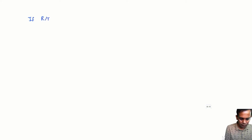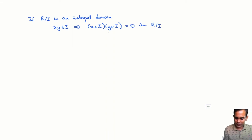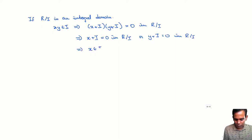Conversely, if R mod I is an integral domain, we just reverse the argument. Suppose XY belongs to I. This implies (X + I)(Y + I) = 0 in R mod I, because this is just XY + I. Since R mod I is an integral domain, this implies X + I = 0 or Y + I = 0 in R mod I, which is the same as saying X belongs to I or Y belongs to I. So I is a prime ideal.